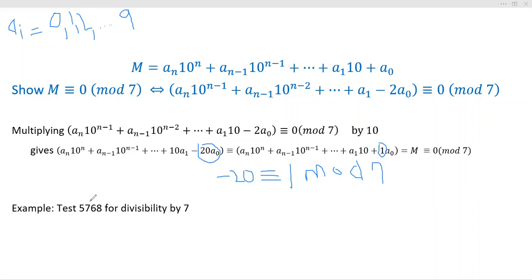Now let's do a check here. Test the number 5,768 for divisibility by seven. Well, this little rule right here would say all you have to do is subtract two times eight.